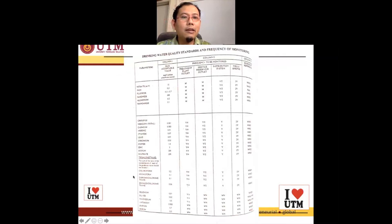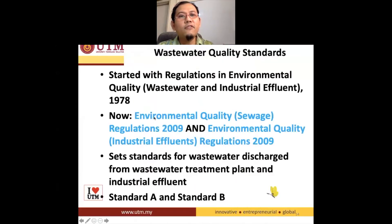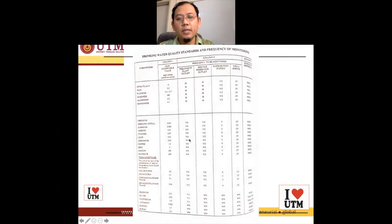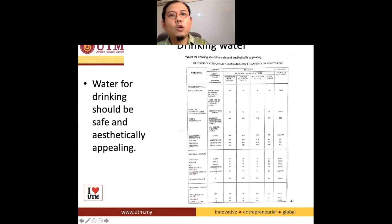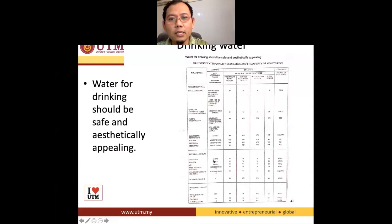On the next slide: nitrate, iron, fluoride, and so on and so forth — those are the parameters that need to be checked. That is the first component. The second component is the limits. Let's say you would like to check the turbidity for drinking water — it has to be below 5 NTU, not higher than 5 NTU.